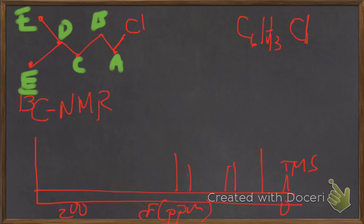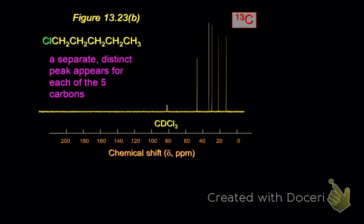But definitely A and B would be further downfield because they are closer to the chlorine. So chances are it goes A, B, C, D, and then E, just the way that we have it written. But I would accept your argument at this point in time, that D, since it's touching three carbons, or C is just touching two, could jump ahead.